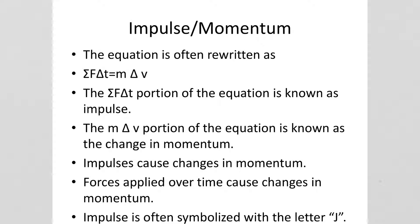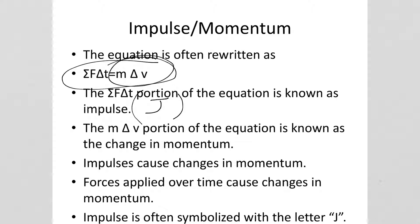We mentioned impulse a minute ago. Sometimes we rewrite the equation for momentum as F delta T equals M delta V. The F delta T portion of this equation is known as impulse, often abbreviated with a J. So impulse is the net force applied to an object and the amount of time that it's applied, and that equals M delta V — the change in momentum, often abbreviated as delta P. Impulses cause changes in momentum. A bigger force causes a bigger change in momentum, or the same force applied over a longer time can cause a bigger change in momentum.